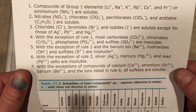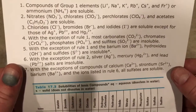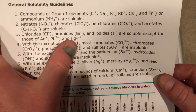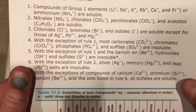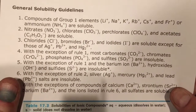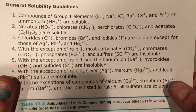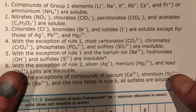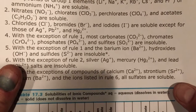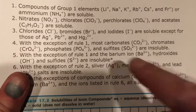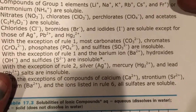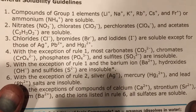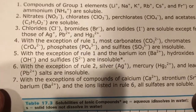Rule three is that chlorides, bromides, and iodides are normally soluble — those are some of the halogens. But there are exceptions: notably silver, lead, and mercury(I). Those are not soluble chloride, bromide, or iodide compounds. Rule four: carbonates, chromates, phosphates, and sulfites are generally insoluble. But when they combine with the group one elements, as in rule one, they are soluble. Other than that, they are not. So watch out for those anions — we usually get an insoluble situation or a precipitate forming.